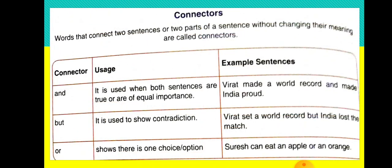Next comes Connectors. Words that connect two sentences or two parts of a sentence without changing their meaning are called connectors. The connectors we are learning are: And, But, Or, So. 'And' is used when both sentences are true or are of equal importance. For example, 'Virat made a world record and made India proud.' Here both are separate sentences of equal importance, so we use the connector 'And.'